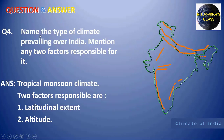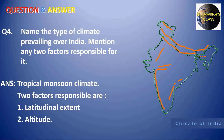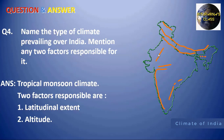Next: name the type of climate prevailing over India and mention two factors responsible for it. The name of the climate is tropical monsoon climate. The first factor is latitudinal extent — the southern portion of India is nearer to the equator, so it has the influence of equatorial climate, while the northern portion, farther from the equator, is influenced by the Tropic of Cancer.